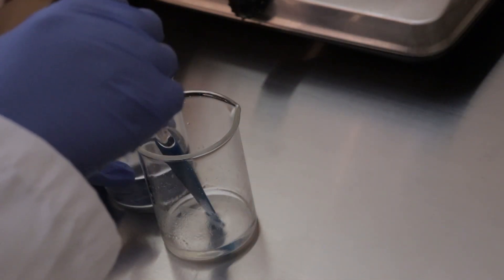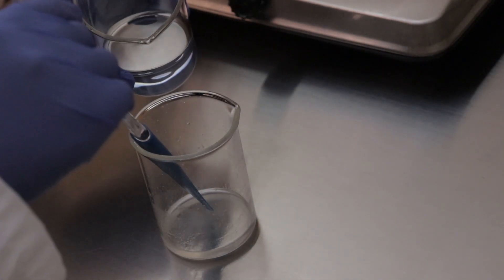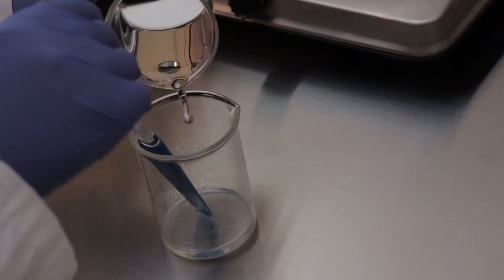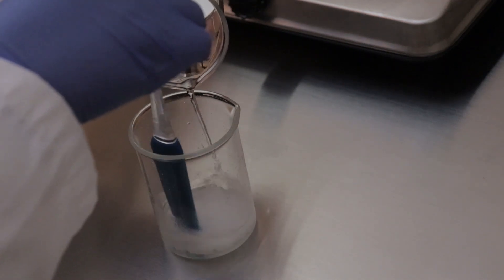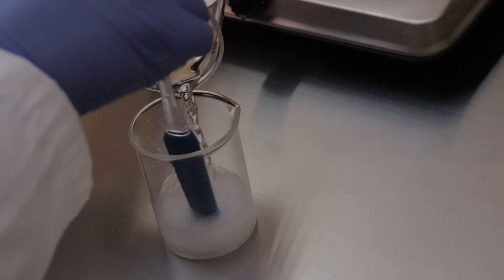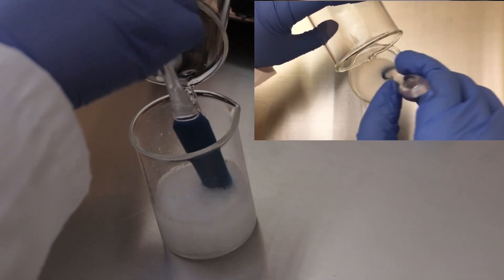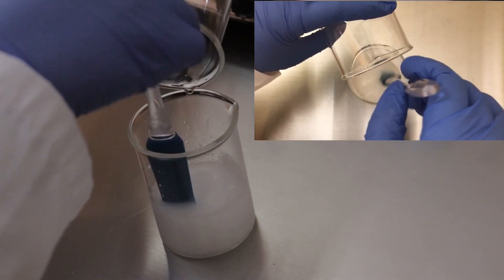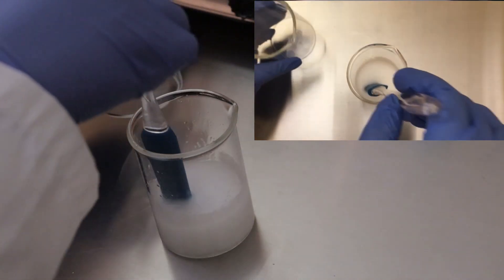So now we're going to move on to my favorite part of the formula, and this is where we're going to combine both of the phases that we've already completed. We'll pour phase A into phase B and then continuously stir. You want to stir until you see this nice smooth and glossy finish.